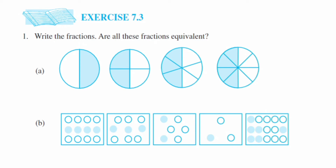Starting with the first circle — it's divided into two parts, so the denominator will be two, and since only one portion is shaded, it will be one upon two. The second has four equal parts with two shaded, so two upon four. The next circle has six equal parts with three shaded — three upon six. The next has eight equal parts with four shaded, so four upon eight.